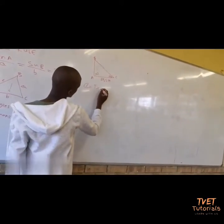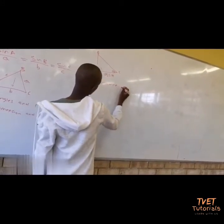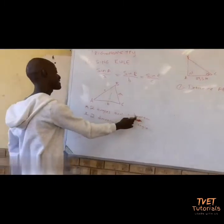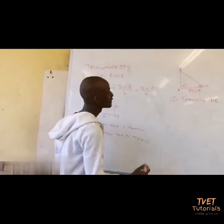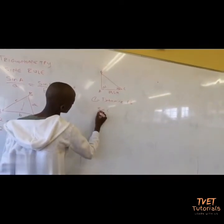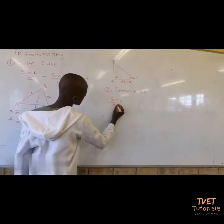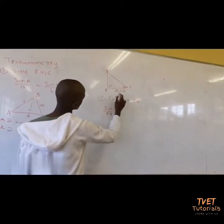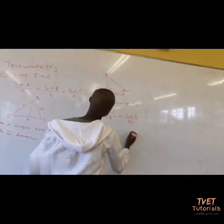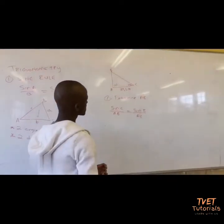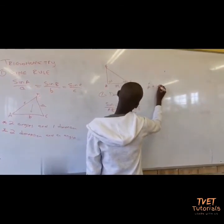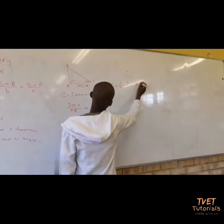You are given two angles and a side. You are going to find AP. Therefore, to find AP, AP over sine C — AP is opposite to C. But you also have a dimension, it's sine B all over AC. So in order to find the angle for B, you must first find angle B.